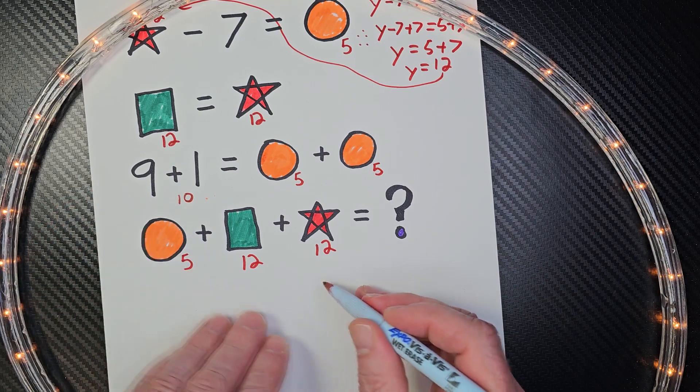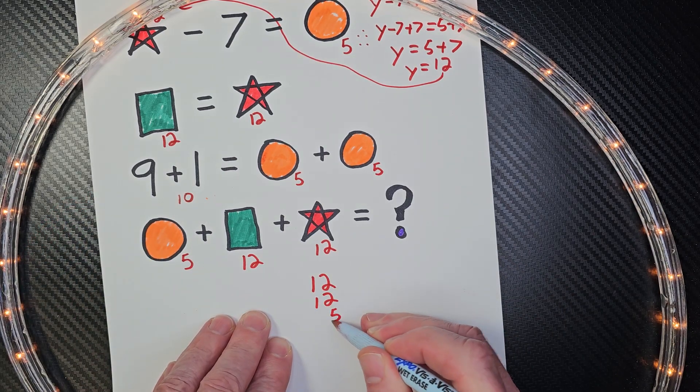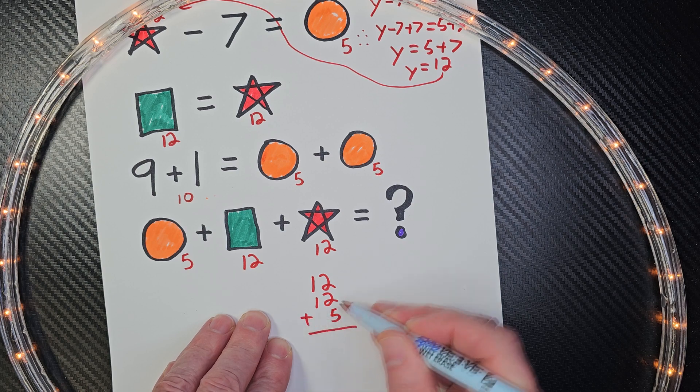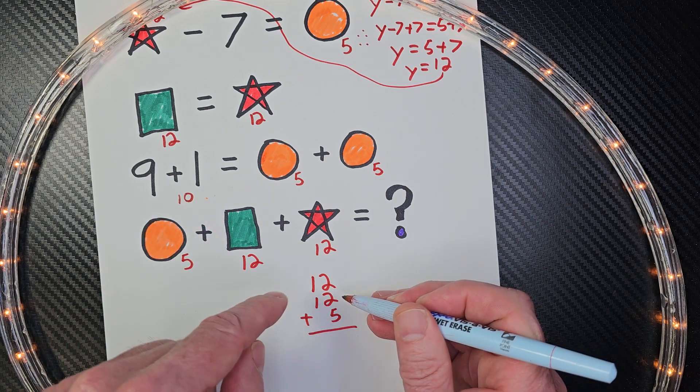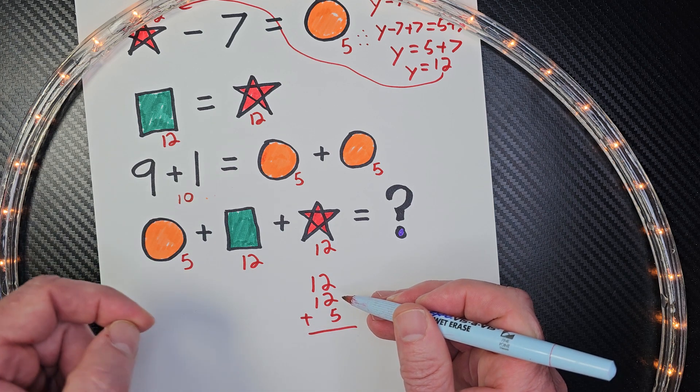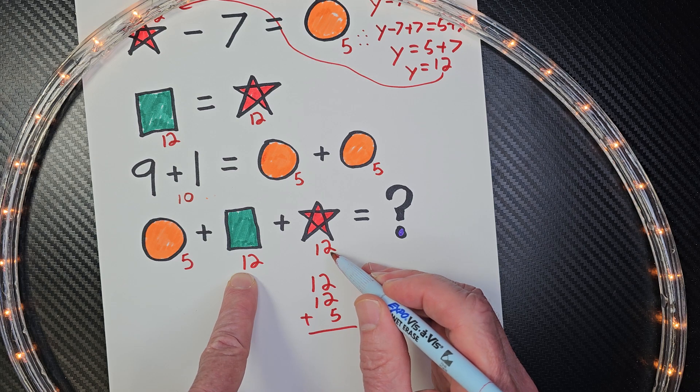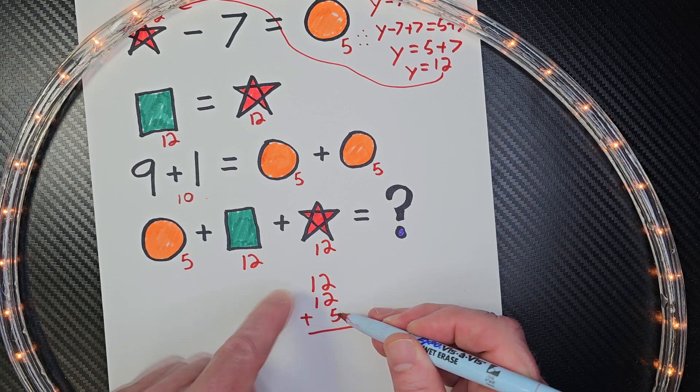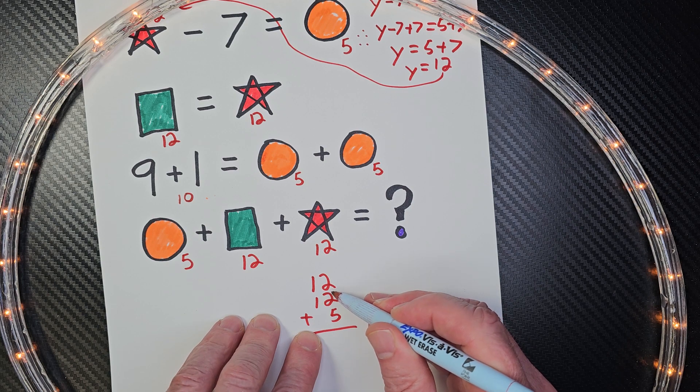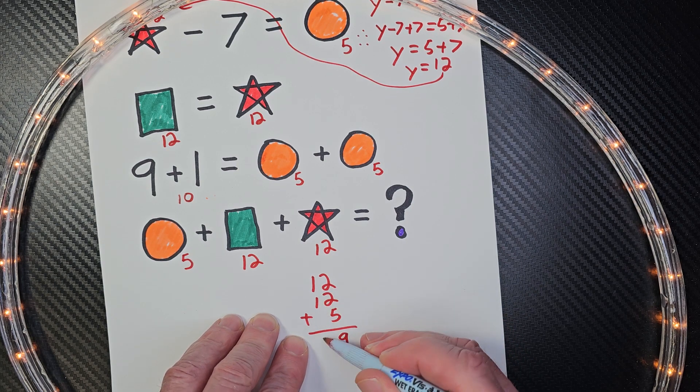I go ahead and add that up. If you want to do it the easy way, 12 plus 12 would be 24, 24 plus 5 would be 29. If you want to write it out, it would be 2 plus 2 would be 4, 4 plus 5 is 9, and then 1 plus 1 is 2.